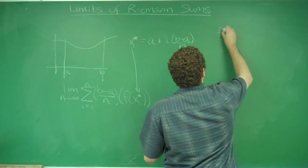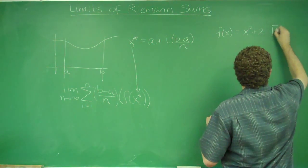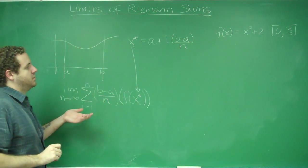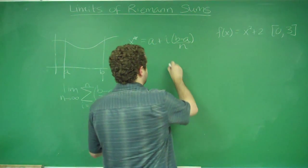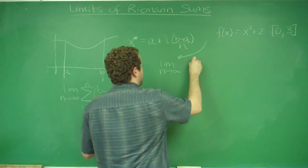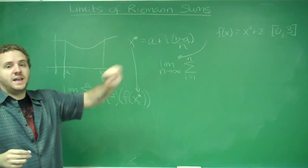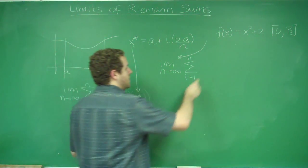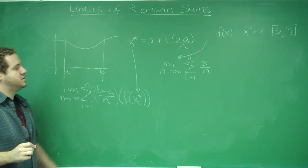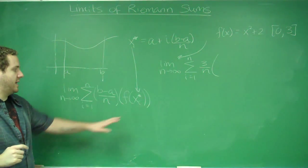This is a tough process, so let's look at an example problem. Let's say our function was x squared plus 2 and we were going on the interval 0 to 3. Using our Riemann sum notation, we're going to do the limit as n goes to infinity, the sum from i equals 1 to n. Our b minus a over n: b minus a is 3 because we're going from 0 to 3, so we get 3 over n. Our function is x squared plus 2, but instead of x, we have to put in our xi star.